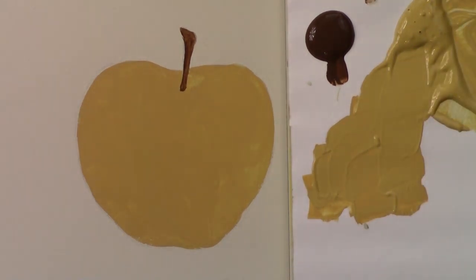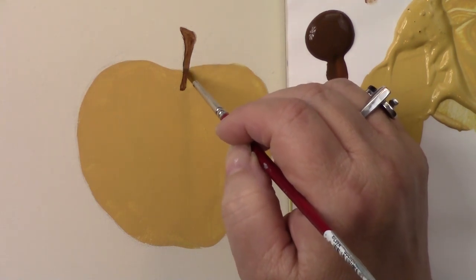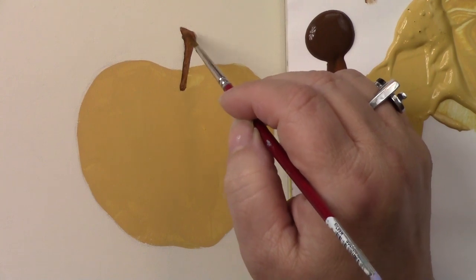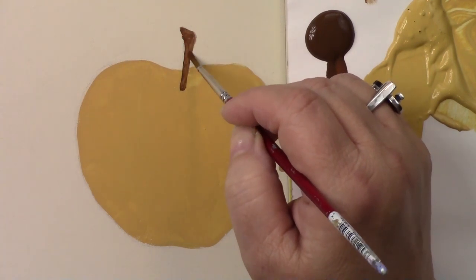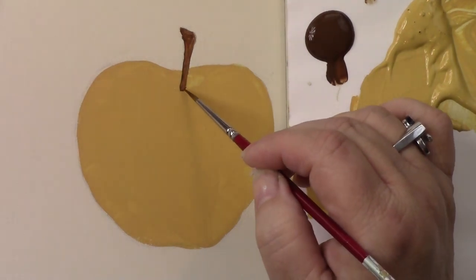So what I'll do is even wipe it on my paper towel and come in and make sure that I have almost no paint in my brush, and then I make sure that all those ridges are gone. That's just so much easier to get into small tight areas.